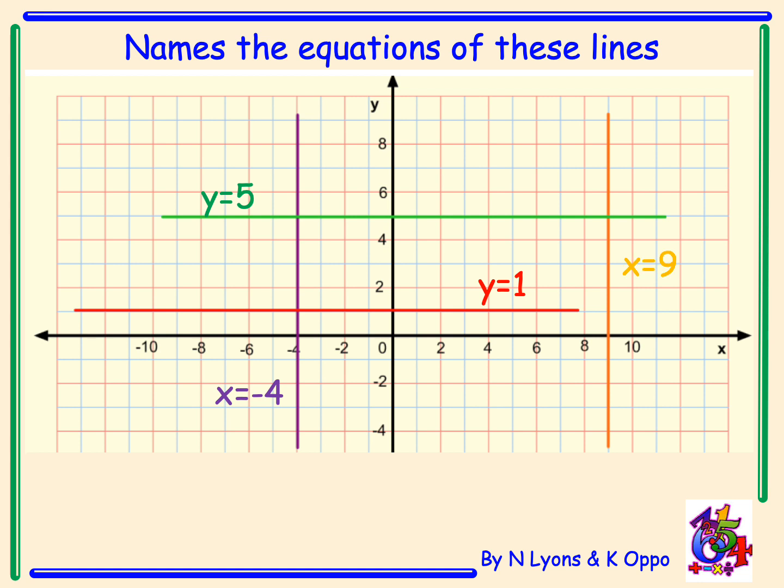You should also know that horizontal lines have a gradient equal to 0 — they're flat. Whereas vertical lines have an undefined gradient; they are vertically straight up and down.